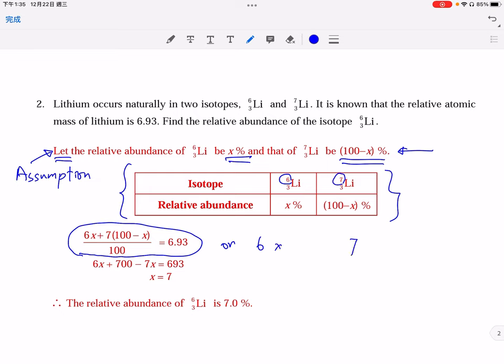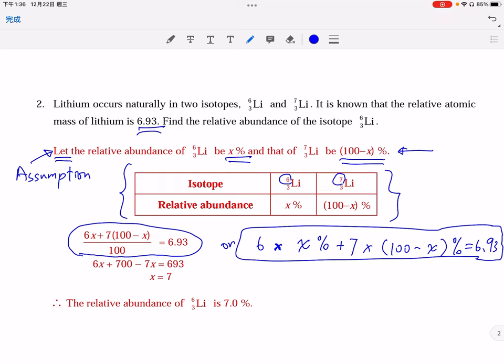So remember to extract the mass numbers 6 and 7. And of course, this is the multiplication, multiplied by x percent, plus the mass number of the isotope being 7, multiplied by 100 minus x percent. So this is another way, of course it should be equal to 6.93, given by the question here.